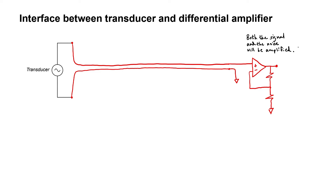One way to remedy this problem is to note that any noise in the environment will be picked up by not only the signal line, but also by the return line or ground path. The signal is encoded in the difference between these two wires, but the noise is common to both of them. Therefore, we can use a differential amplifier to amplify only the difference.